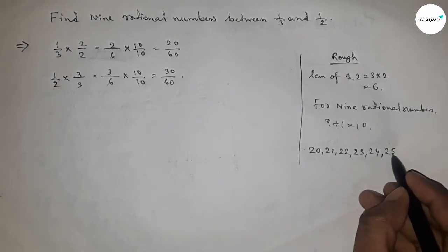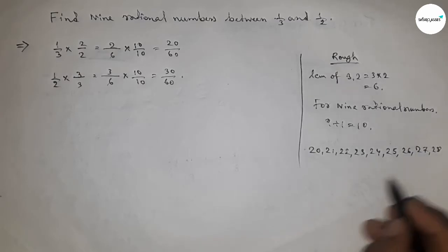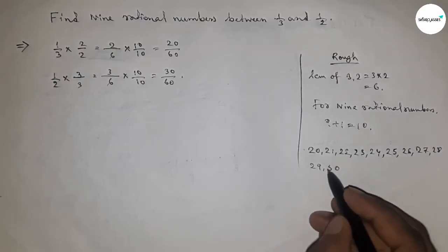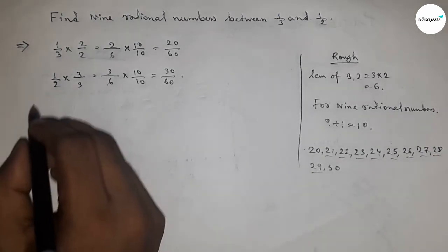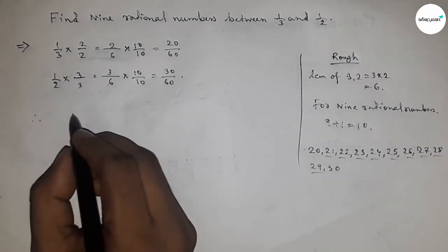nine numbers, and by these nine numbers we can form nine rational numbers. So the first rational number is